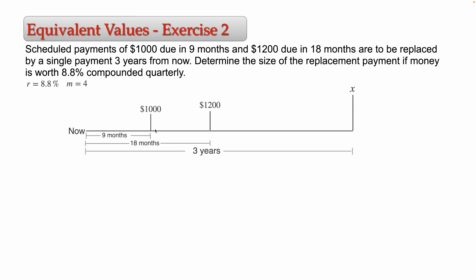To solve a problem where we need to find an equivalent replacement payment, we first choose a focal date. The best focal date — the one that gives the easiest solution — is the date of the unknown quantity. So I'm going to choose three years from now as the focal date and find the value of each payment at that date. Obviously, the value of X will be X, but the value of the $1,000 needs to be moved forward in time using the future value formula. To do that, I need to know the time between the scheduled date and the focal date.